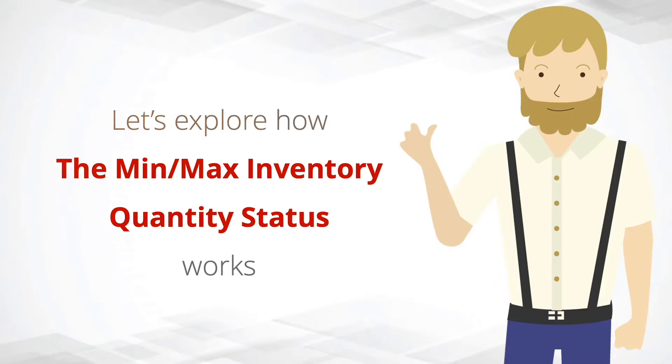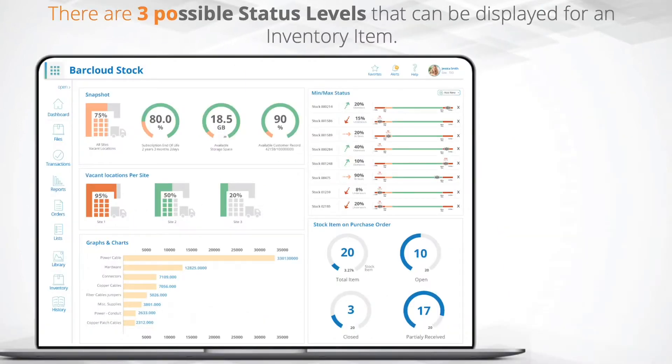Let's explore how the Min-Max Inventory Quantity Status works. There are three possible status levels that can be displayed for an inventory item.